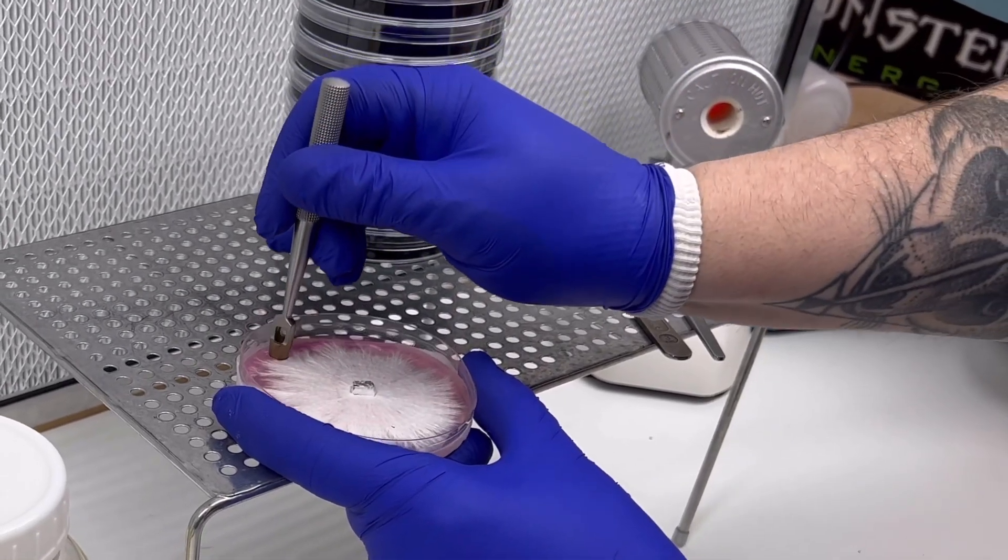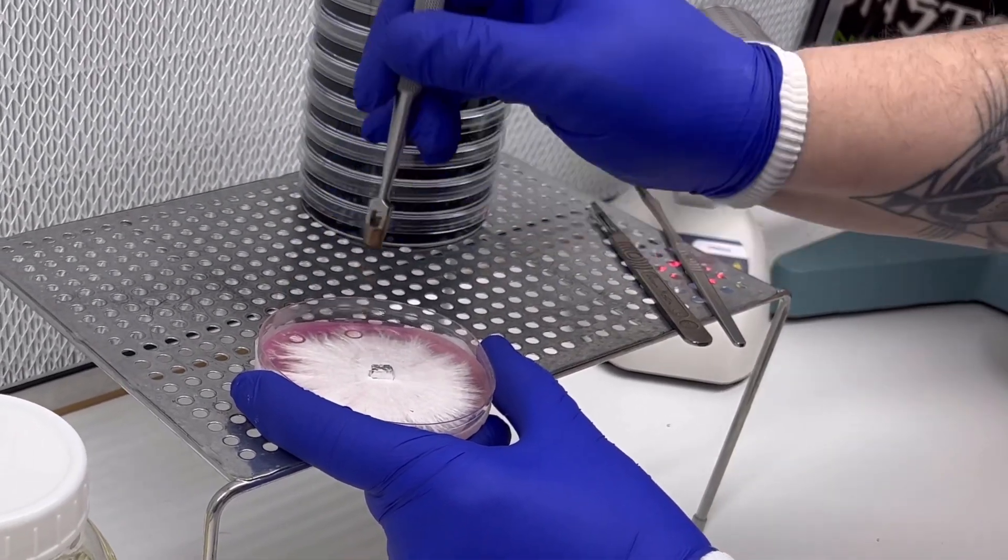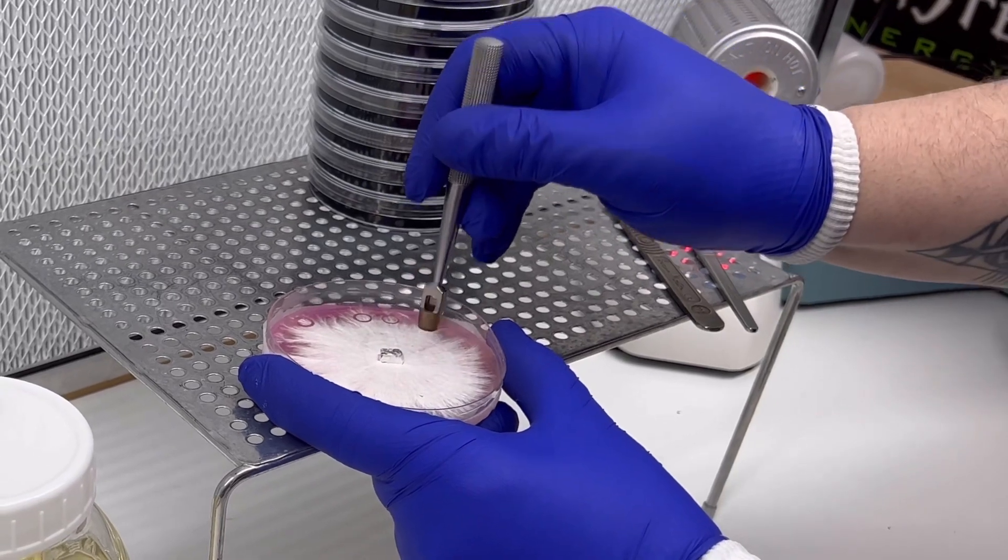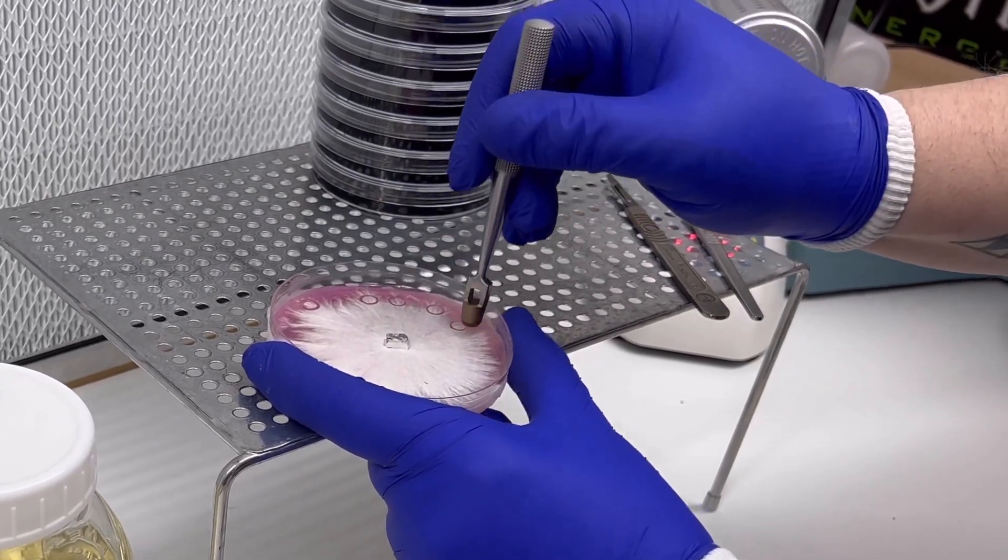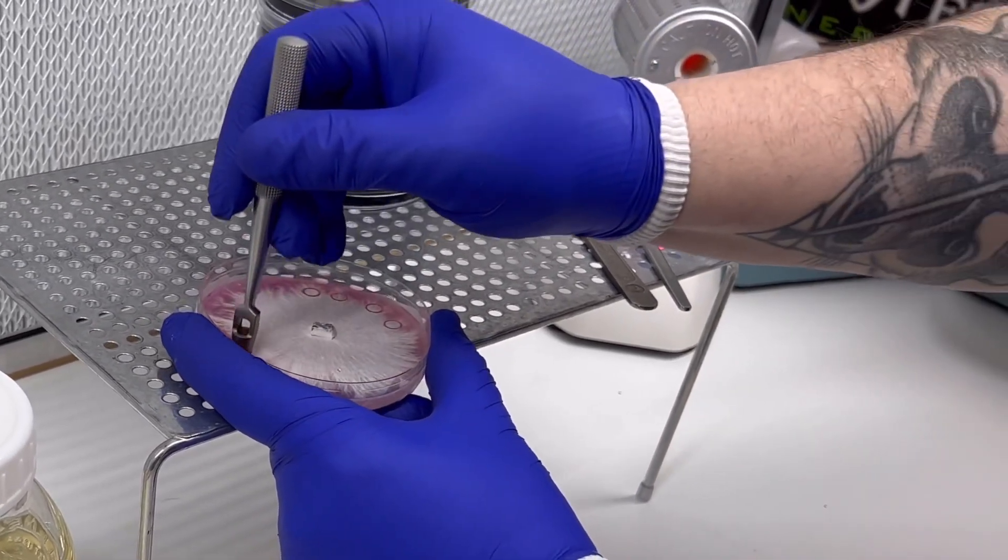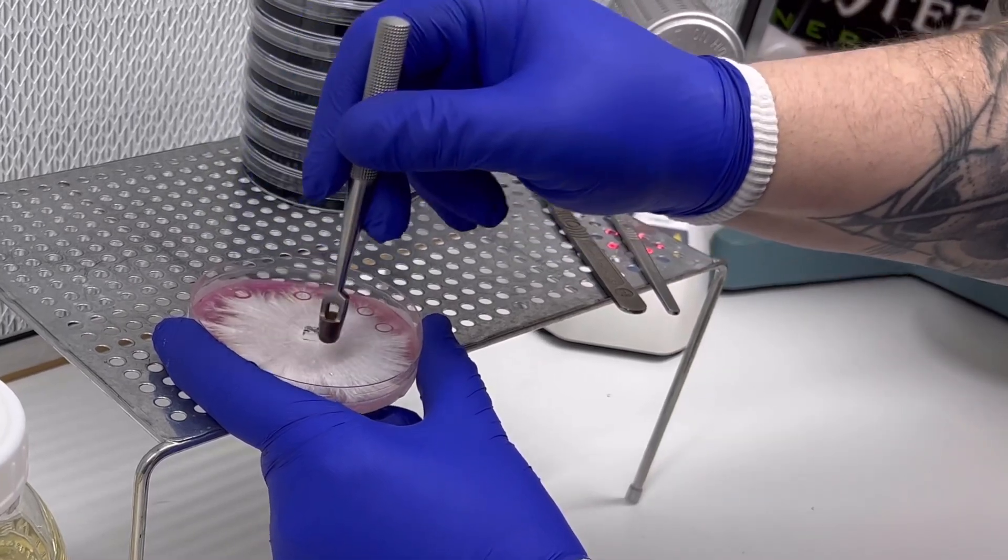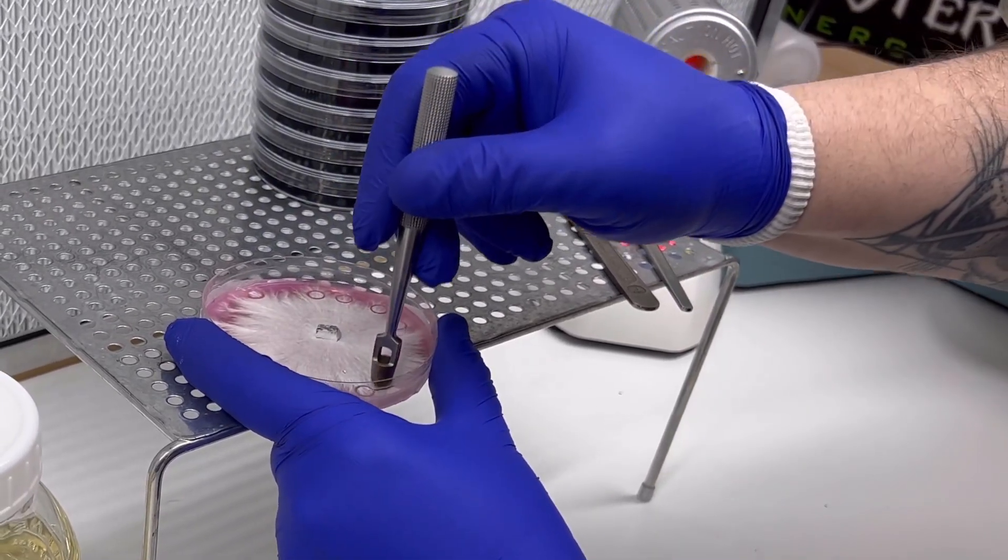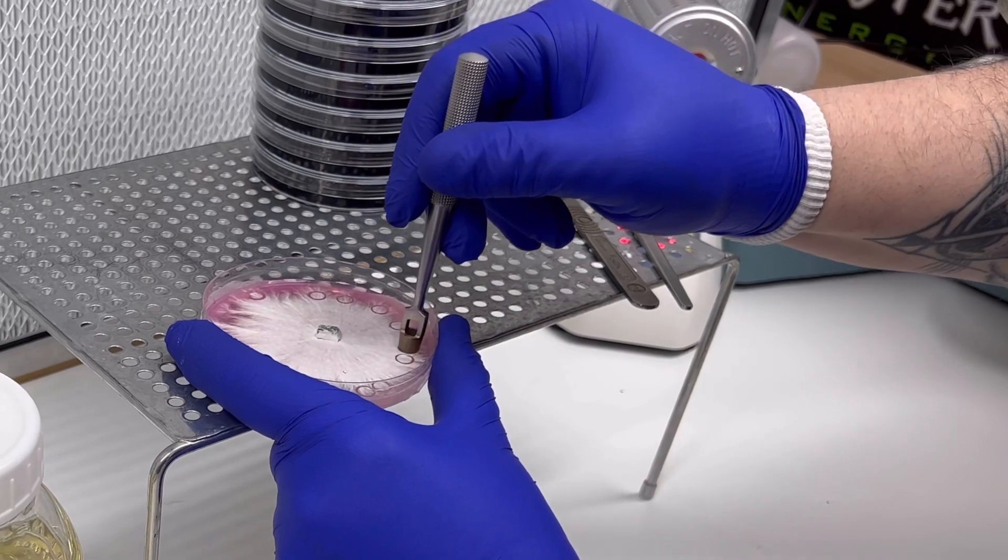We've sterilized our punch in the back decinerator. You can use a flame sterilizer if you want, or just do whatever you can to burn off the bacteria. Then we're just going around the leading edge of the mycelium on the agar and we're punching little holes where we want to take our transfer points.